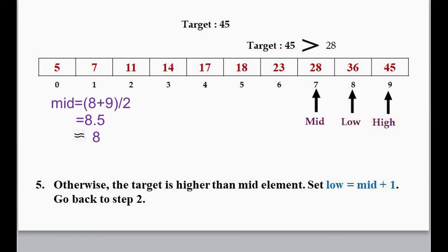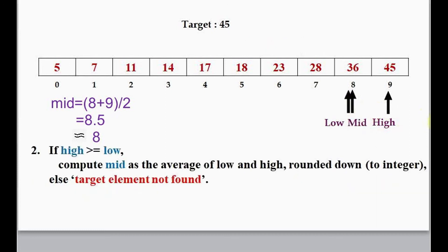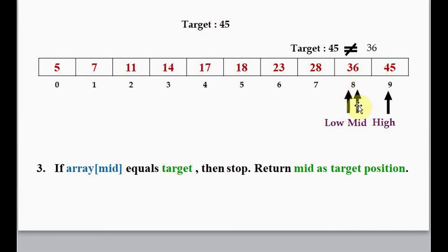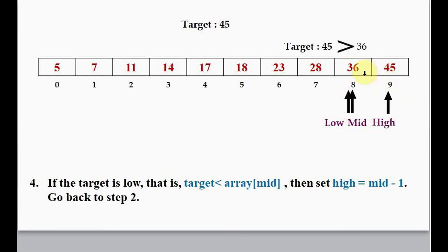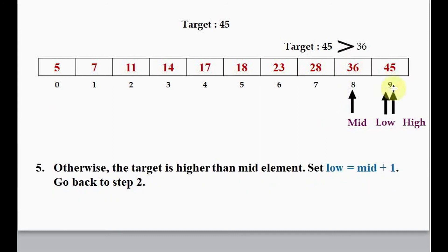We go back to step 2. We find the mid position: 8 plus 9 divided by 2 gives 17 divided by 2, which is 8.5, rounded down to 8. Both low and mid now point to position 8. We check if array[mid] equals target — no, they are not equal. If target is less than array[mid] — that is also not true. The last possibility: target is greater than array[mid], so we set low equal to mid plus 1. Low changes to 9.